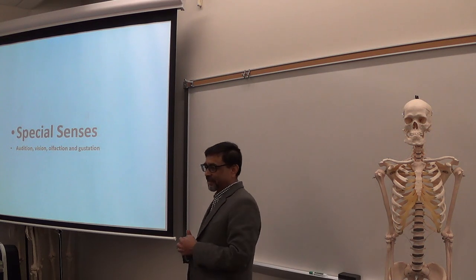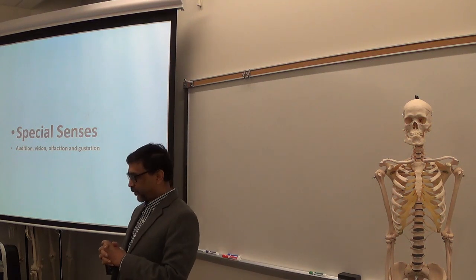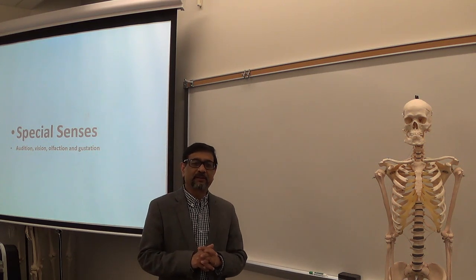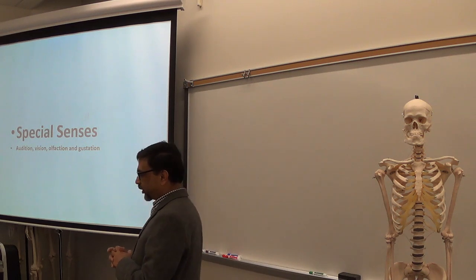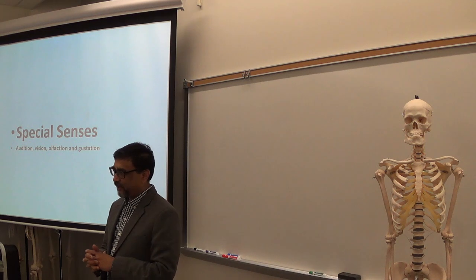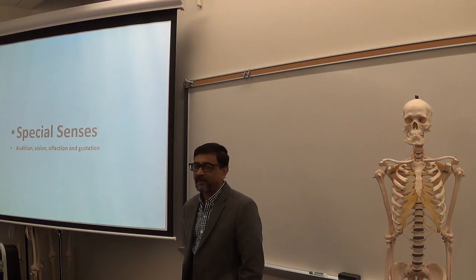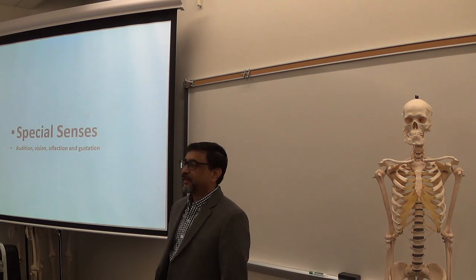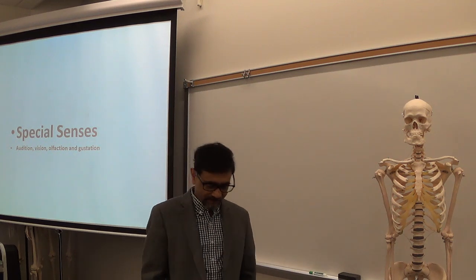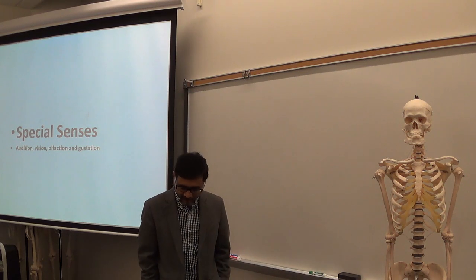Spatial senses include the visual system, auditory system, olfactory system, and gustatory system. In the last lecture, I talked about the visual system. Today I'll talk about the other three spatial senses: your olfactory system, your gustatory system, and the auditory system. The olfactory system is responsible for olfaction — that means smell. The gustatory system is responsible for taste, and the auditory system is responsible for hearing.